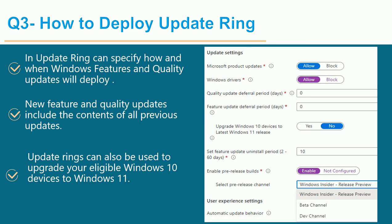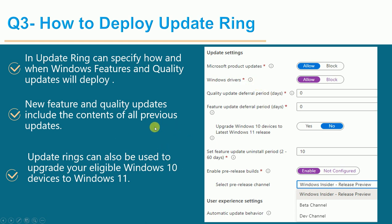Question three: how to deploy update rings. All patch deployments come under update rings — whenever you want to deploy monthly patches, you use update rings. In the update ring, you can specify how and when feature and quality updates will be deployed. New feature and quality updates include the content of all previous updates, so your current month's patches include all prior quality and feature updates.